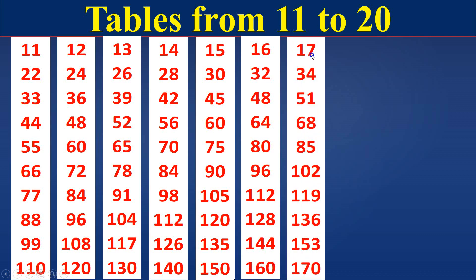17 times table. 17 ones are 17. 17 twos are 34. 17 threes are 51. 17 fours are 68. 17 fives are 85. 17 sixes are 102. 17 sevens are 119. 17 eights are 136. 17 nines are 153. 17 tens are 170.